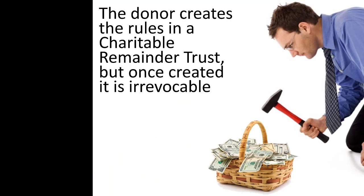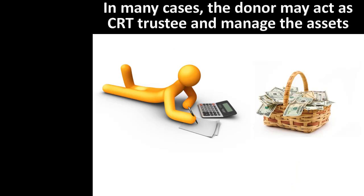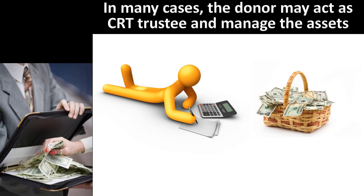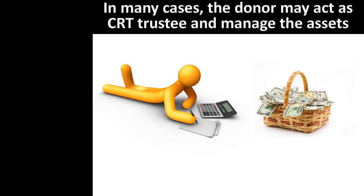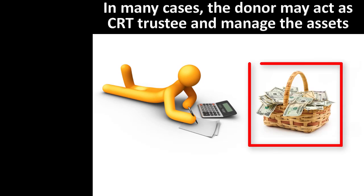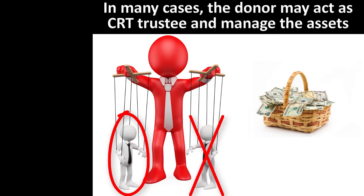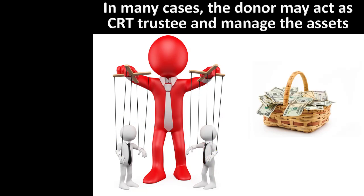Although the donor loses the ability to change the rules of the trust once it is created, the trust rules can still provide for ongoing donor influence in several areas. In many cases, the donor may act as trustee of the charitable remainder trust and continue to manage the assets and investments. There are guidelines that must be followed to ensure the donor is not receiving any additional benefit or engaging in self-dealing, but there is no prohibition against a donor managing his or her own charitable remainder trust. Alternatively, the donor may choose who the trustee will be and keep the ongoing power to appoint or remove trustees, selecting a friend, family member, trust company, or even a charity.